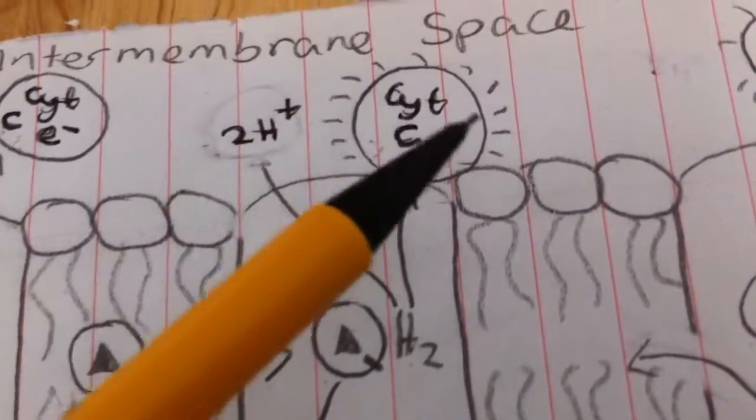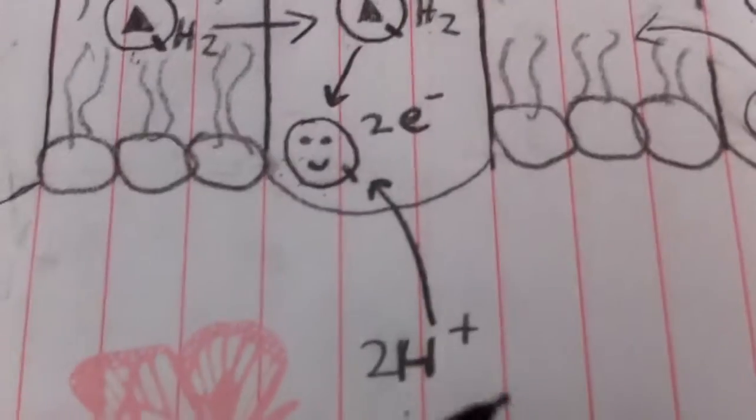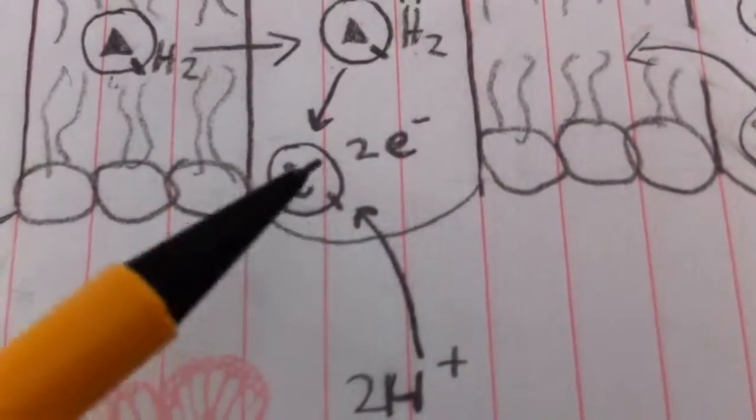The other electron goes off to a new cytochrome C that's docked, so that can take that off to complex 4. And the protons again are pumped out into the intermembrane space. Now, this one takes two protons from the matrix.